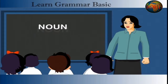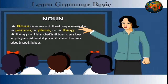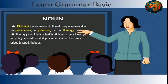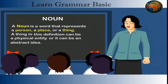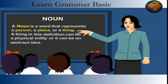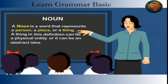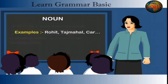Noun. A noun is a word that represents a person, a place, or a thing. A thing in this definition can be a physical entity or it can be an abstract idea. Examples: Rohit, Taj Mahal, Car.